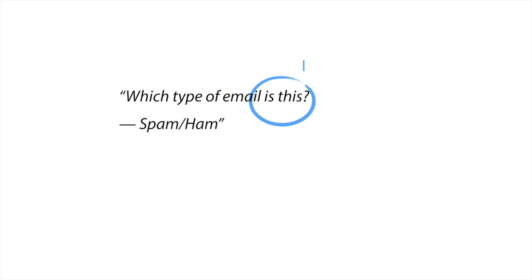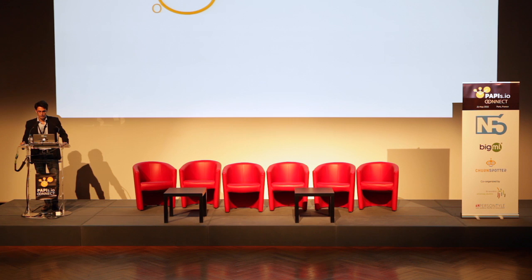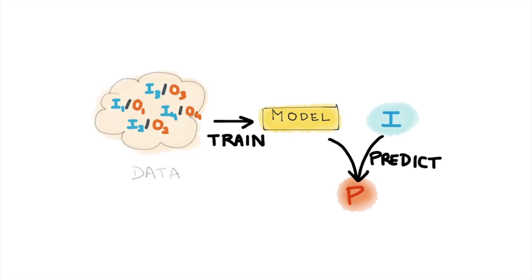Just a few terms: the email is what we call the input, and the class we label this input with is called the output. We're given an input and we have to predict this output. The way machine learning works is you've got data — a cloud of input-output pairs. Based on these examples of inputs and associated outputs that have been observed, we can learn something called a model that explains the relationships between these things. When we use it on a new input we've never seen before, we're able to create a prediction for what the output should be. There are two main phases: train and predict.